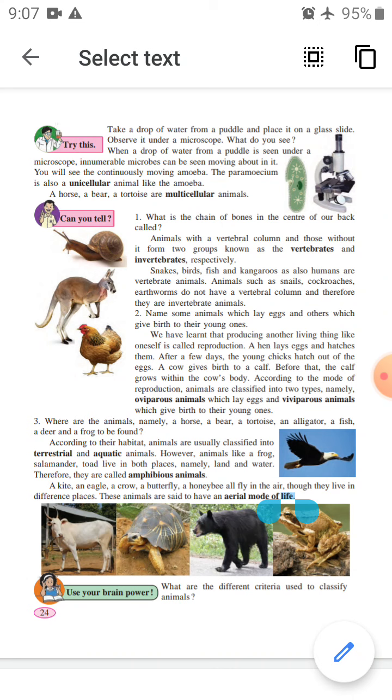According to their habitat, animals are usually classified into terrestrial and aquatic animals. However, animals like frog, salamander, and toad live in both places, namely land and water. Therefore they are called amphibious animals.